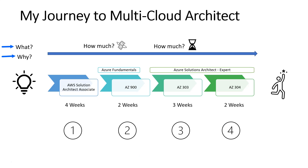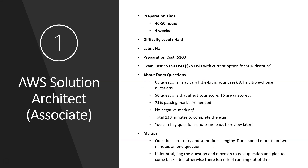Now back to my cloud journey. Let's look at the four steps I took to become a multi-cloud architect. The first one is AWS Solution Architect Associate — this is where I started. It took 40 to 50 hours of preparation over four weeks. I have prepared another video with a detailed hour-by-hour plan covering what courses I took, what labs I practiced, and all the details. I consider this a hard exam.